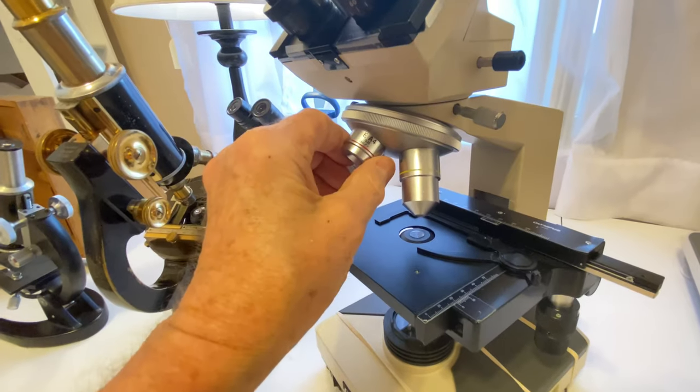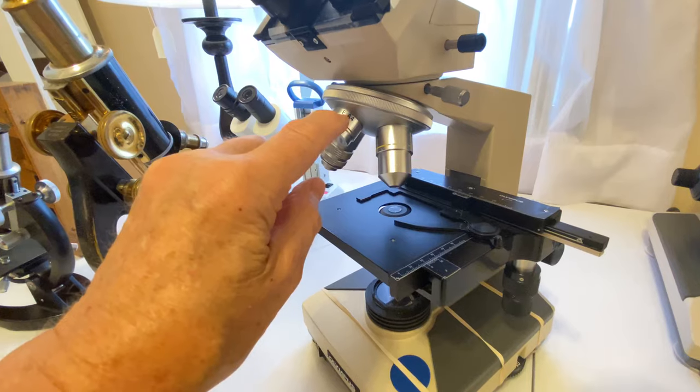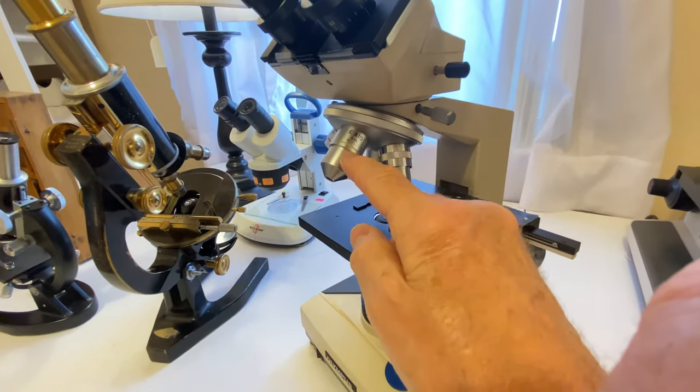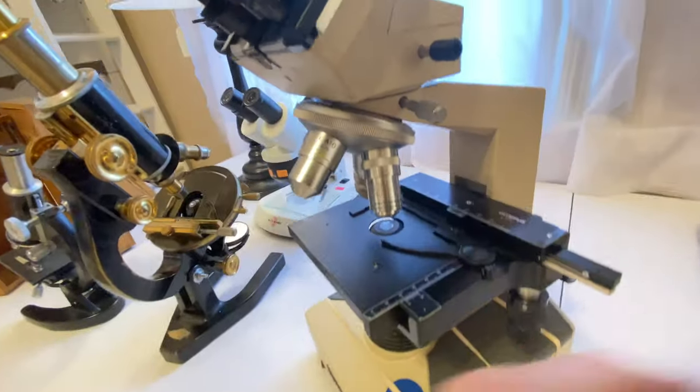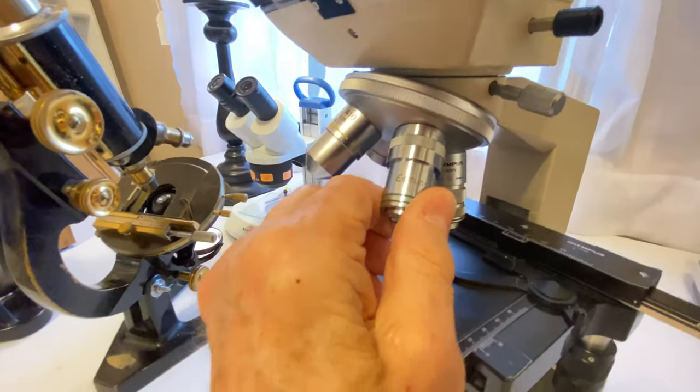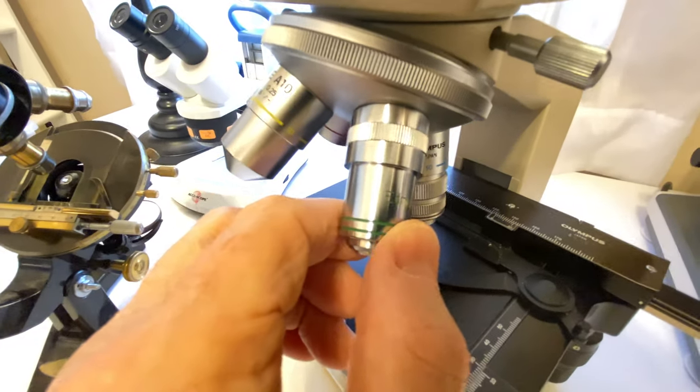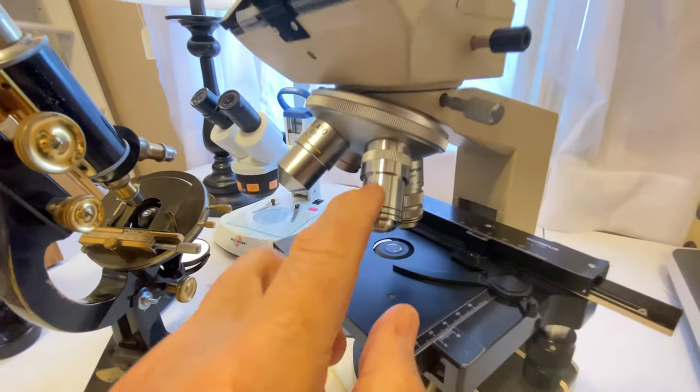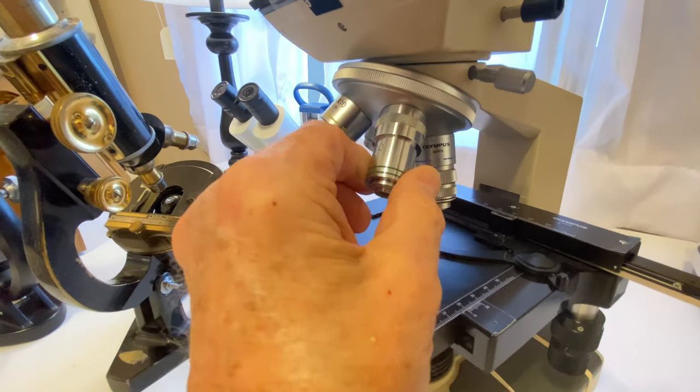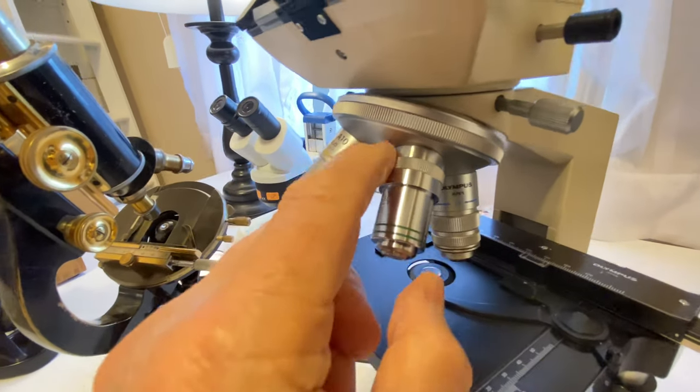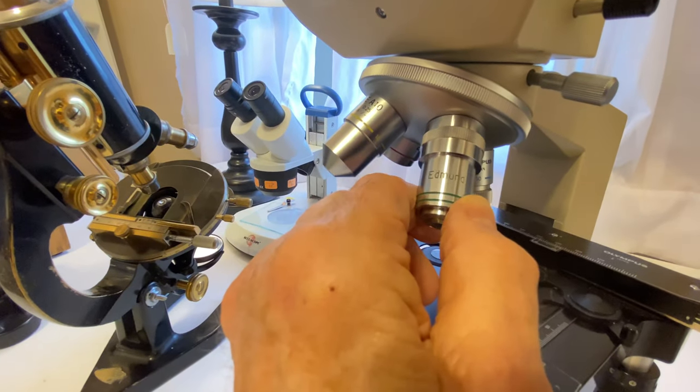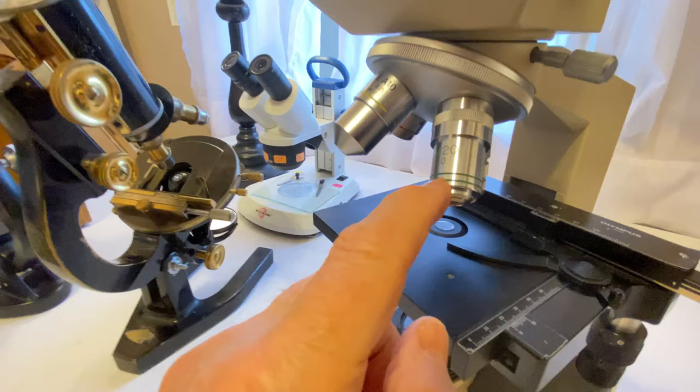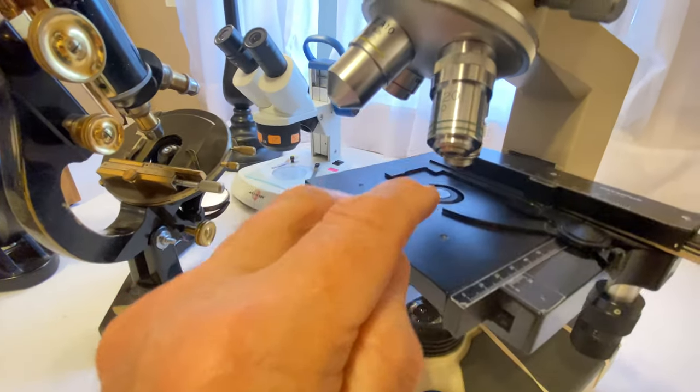So this one came with four objectives, the E series. Then we have the 10 power E series. Then I have a very interesting objective here. This one is by Edmund, 20 power Edmund. So I looked up Edmund, and Edmund objectives are very expensive, in the hundreds and maybe even thousands of dollars. I know this isn't part of that series. Maybe it's not even by the same company. But this was a very inexpensive 20 power. But what surprised me about this is the high optical quality, which actually surprised me. I decided to keep it.